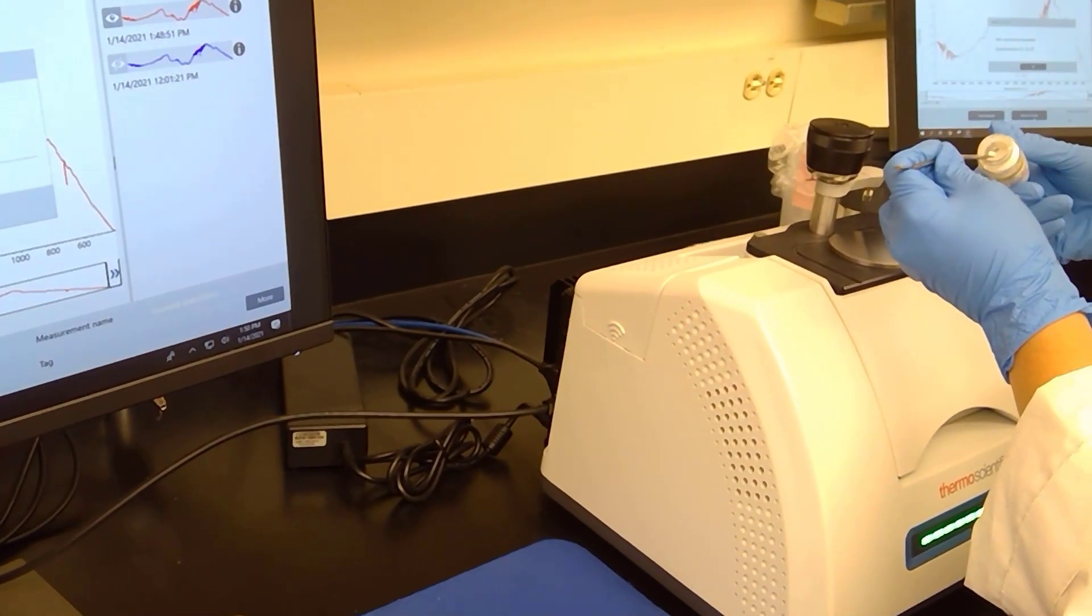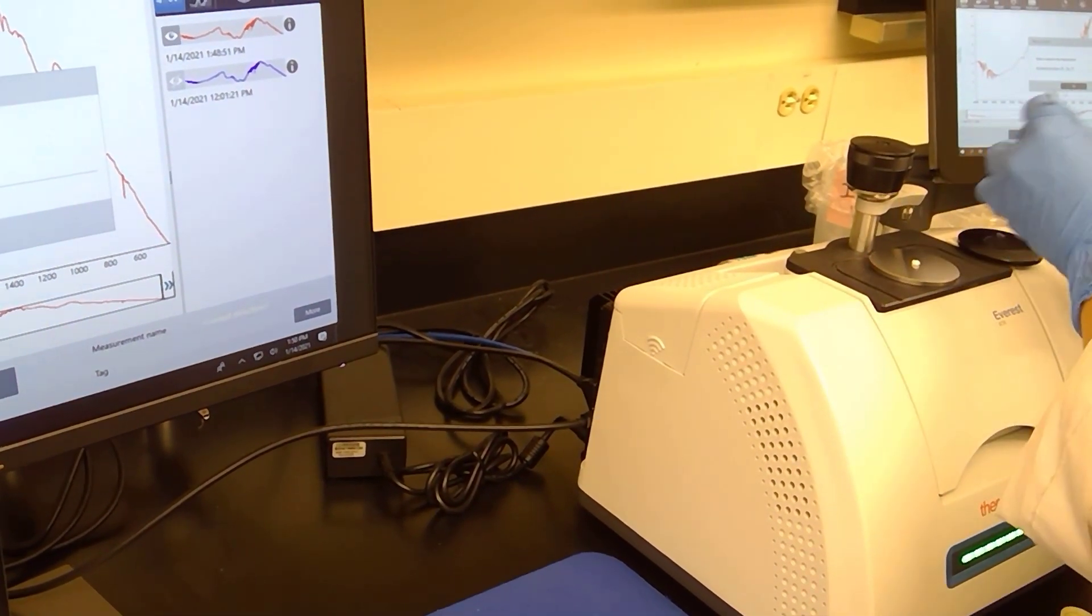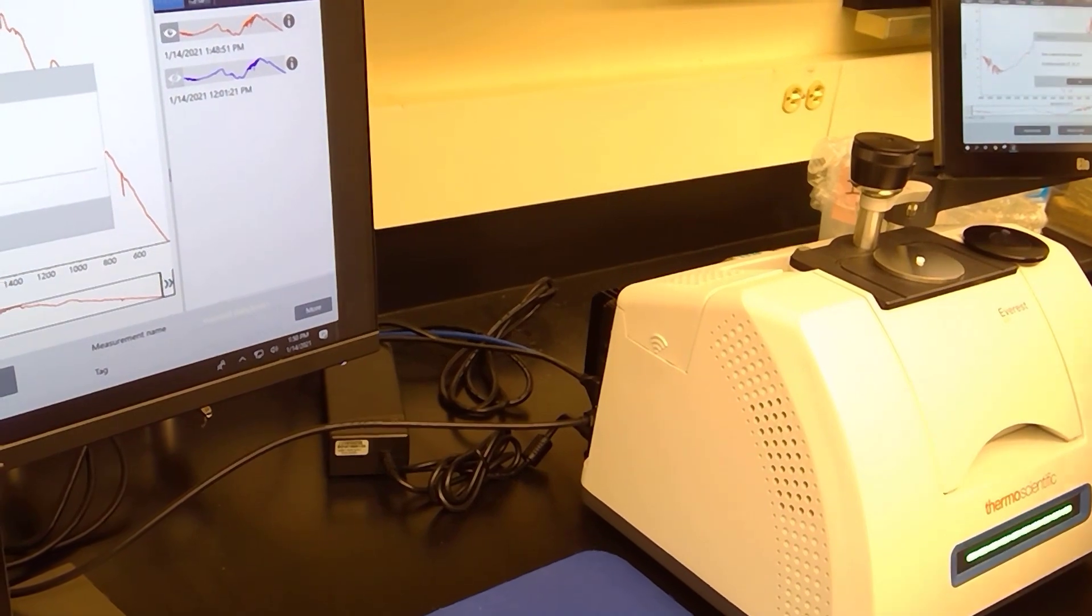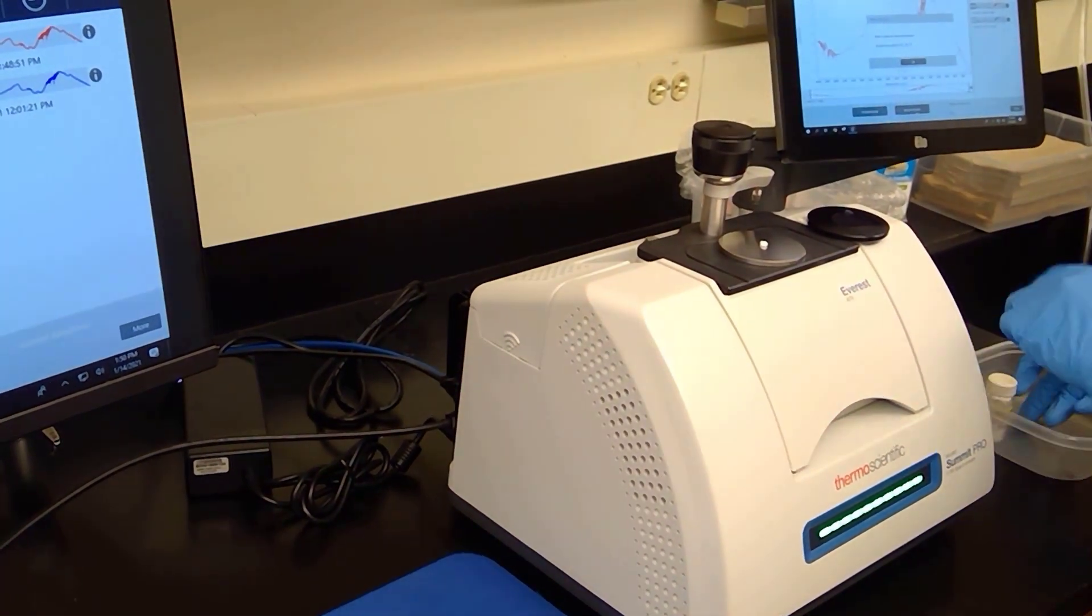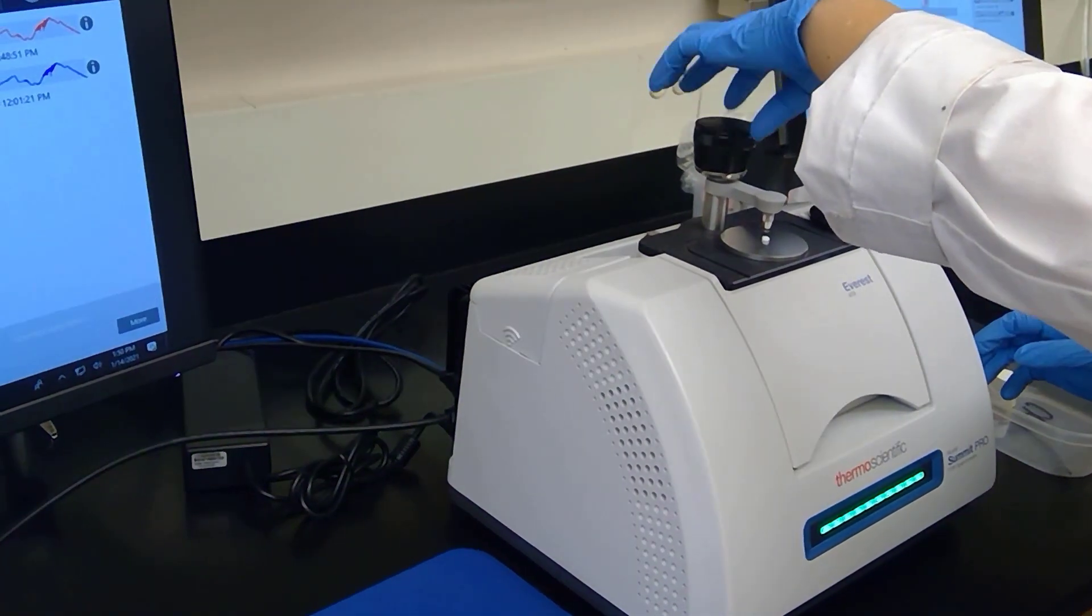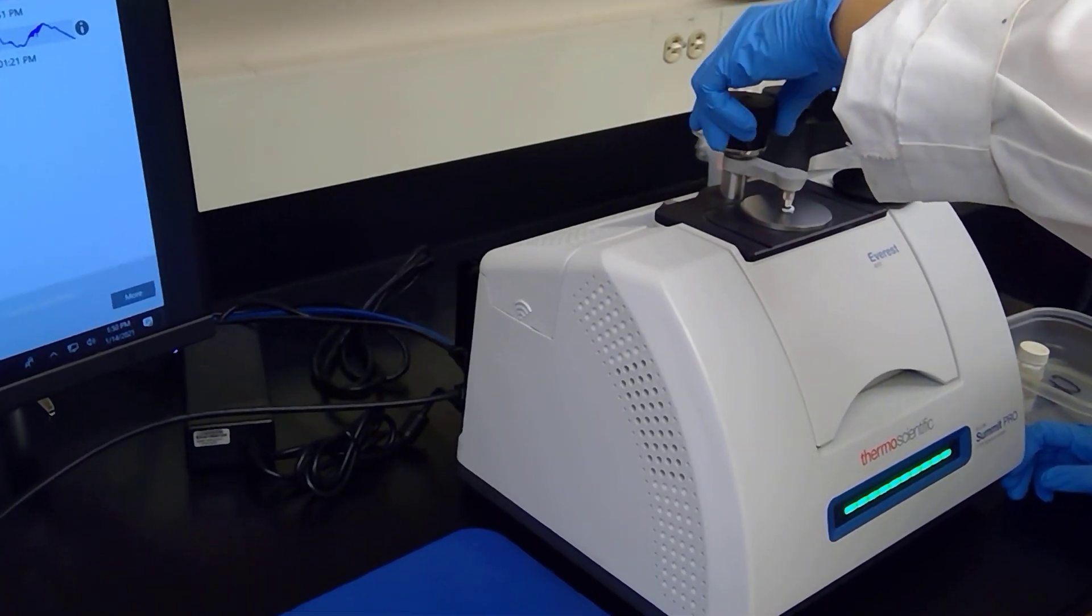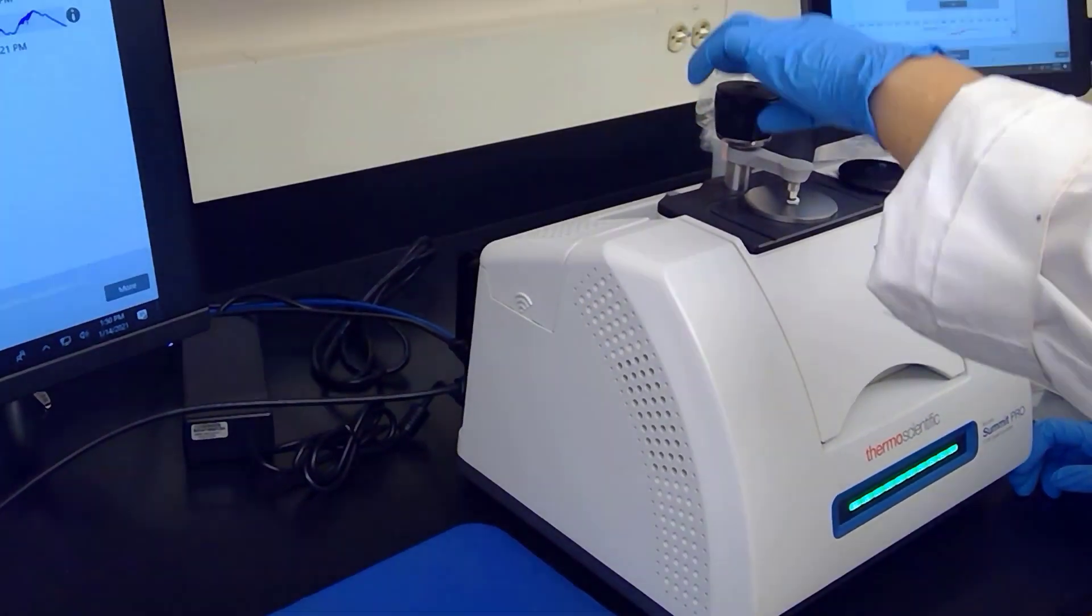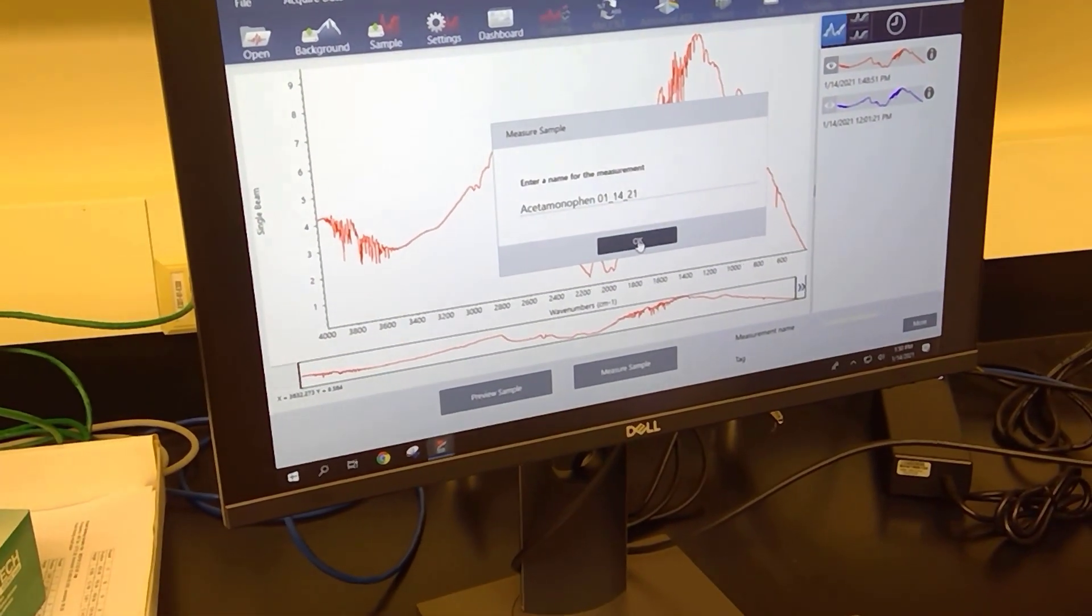I'm going to take a small scoop of acetaminophen from my scintillation bottle, and it doesn't have to be very much. I'm going to place it right on the crystal, and now I will press my solid using the pressing arm. Now we can go ahead and click okay and request that the sample be read.